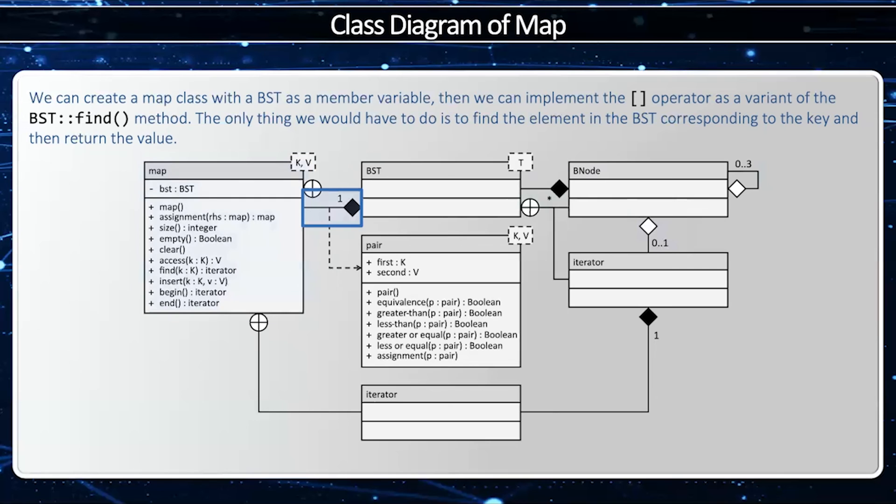The map is going to have one binary search tree. And this binary search tree is going to be a private nested class because we don't want the client to know anything about the BST. Therefore, it's a nested class, and it's a private one.